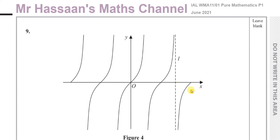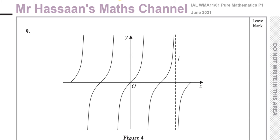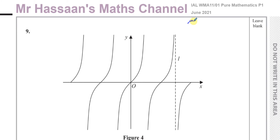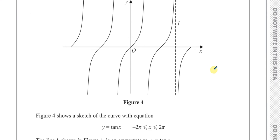Okay, welcome back. This is Mr. Hassan's Maths Channel and this is question number 9 from the International A-Level Edexcel Pure Mathematics 1 P1, June 2021 exam. This is the last question on the paper, question number 9, which is about trig graphs.